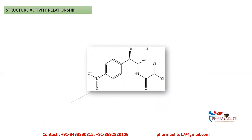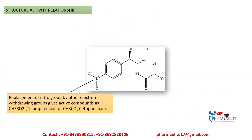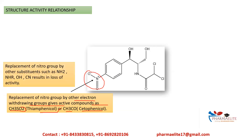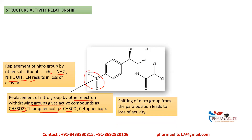Now we'll see the structure-activity relationship of chloramphenicol. Replacement of the nitro group by other electron-withdrawing groups gives an active compound — for example, CH3SO2 gives thiamphenicol. However, replacement of the nitro group by substituents such as NH2, NHR, OH, or CN results in loss of activity. Shifting of the nitro group from the para position also leads to loss of activity.